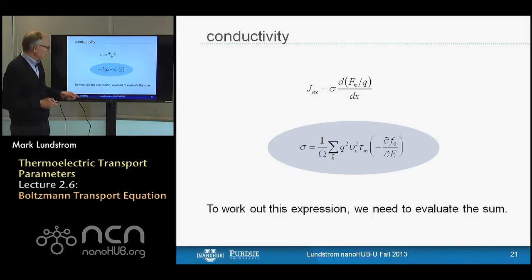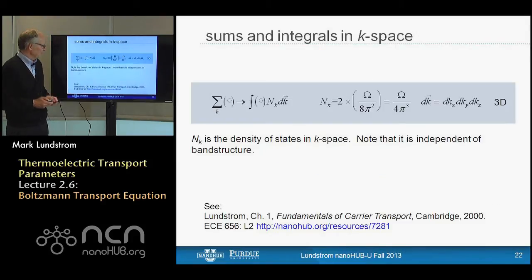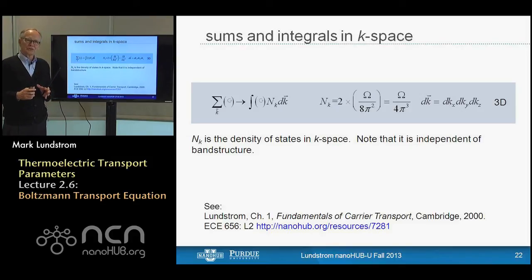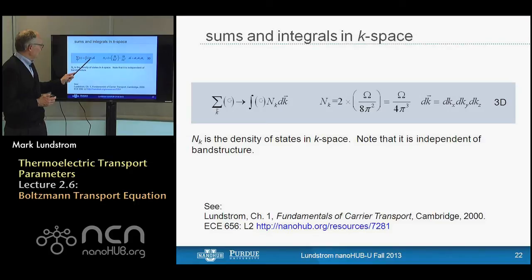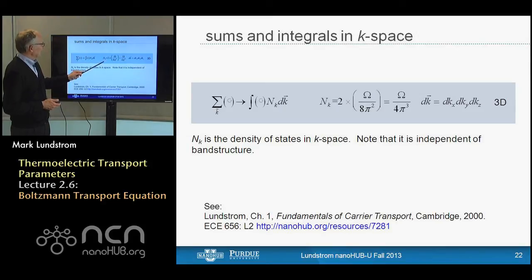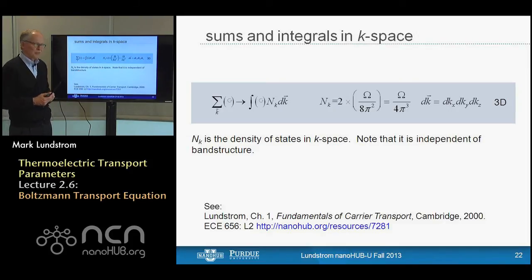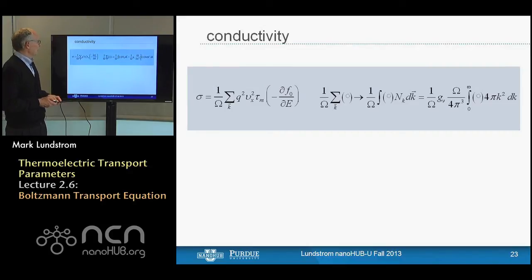Inserting our solution, we write the sum as tau_m times minus dF0/dE times velocity dot the generalized force, with another velocity factor — so we have a vector times a vector, giving tensor quantities for transport coefficients. For high-symmetry semiconductors these become diagonal tensors. One advantage of the Boltzmann equation is that for complex anisotropic materials, it's relatively straightforward to derive these conductivity tensors. Assuming constant temperature, the only driving force is the gradient in quasi-Fermi level.